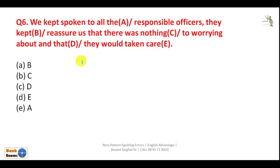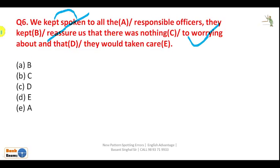Next question: 'We kept spoken to all the responsible officers; they kept reassuring us that there was nothing to worrying about and that they would taken care.' 'Keep/kept' is followed by the -ing form, so 'spoken' should be 'speaking'. 'To worry' is correct, not 'to worrying'. 'Would be taken care of' is correct, not 'would taken care'. Only the B part — 'responsible officers they kept' — is correct, and B is given in option A, so your answer is A.